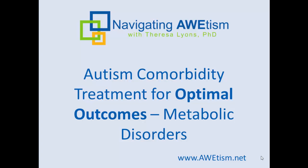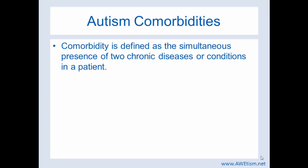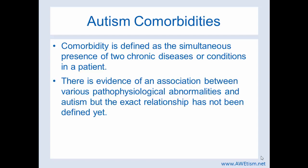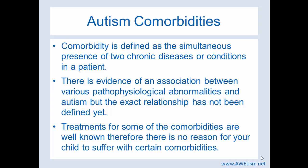If your goal is an optimal outcome for your child with autism, it's really important to understand comorbidities. Comorbidities is defined as the simultaneous presence of two chronic diseases or conditions in a patient. There's evidence of an association between various pathophysiological abnormalities and autism, but the exact relationship has not been defined yet. There are treatments for some of these comorbidities, and those treatments are really well known. Therefore, there's absolutely no reason for your child to suffer with certain comorbidities. It's very common to confuse a comorbidity with just being part of autism, and in most cases it's not.